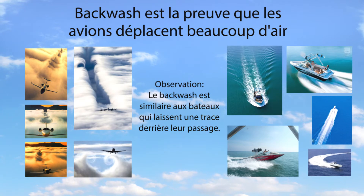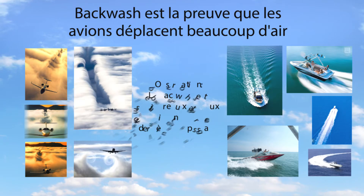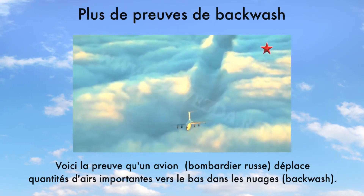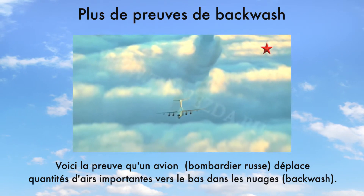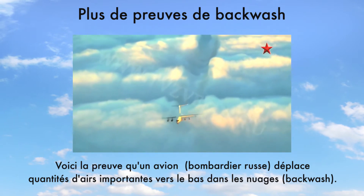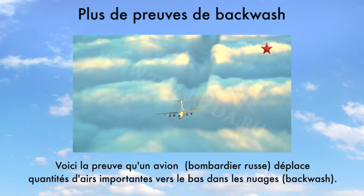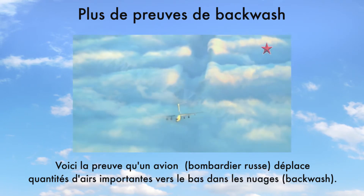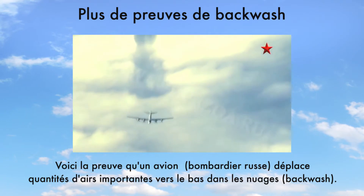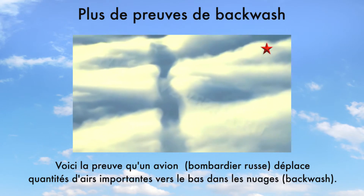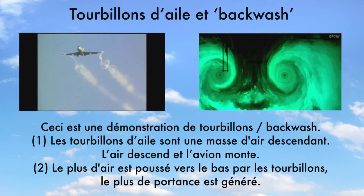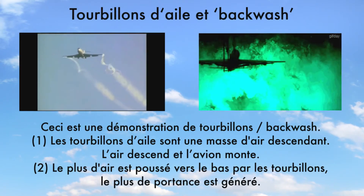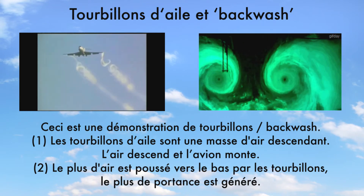Physical evidence for mass displacement is the backwash behind the plane. The wing vortexes are clearly pushing air mass down and backwards. The trailing edge of the wing also brings air mass down and backwards as a critical part of how a plane generates lift.